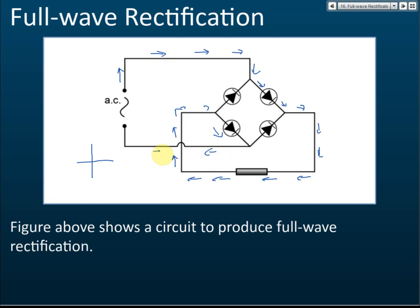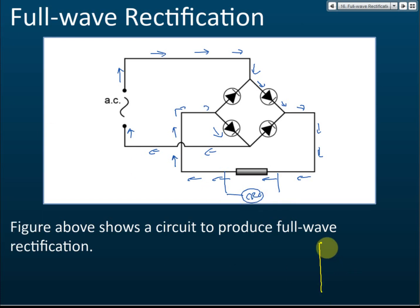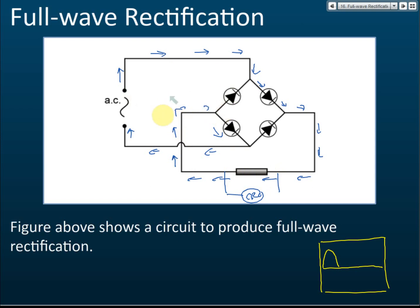So the current flows this path during forward bias. If you connect this to a cathode ray oscilloscope, you will get a waveform that increases then decreases — a half-sine pulse. That is the output for the clockwise half of the cycle.